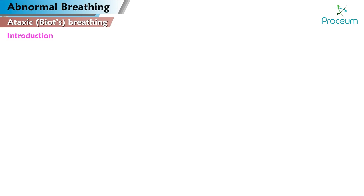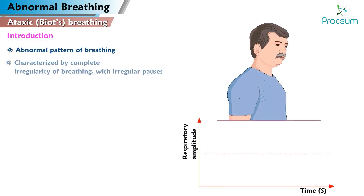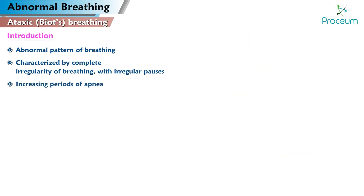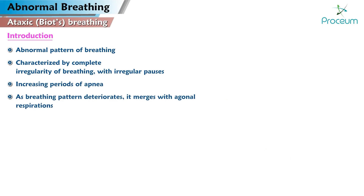Ataxic or Biot's breathing. Introduction. Ataxic or Biot's breathing is an abnormal pattern of breathing characterized by complete irregularity of breathing, with irregular pauses and increasing periods of apnea. As the breathing pattern deteriorates, it merges with agonal respirations.